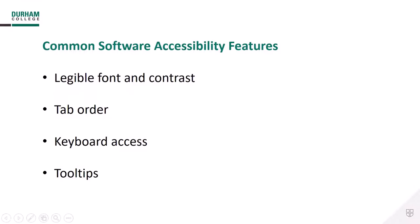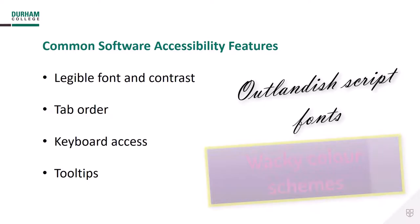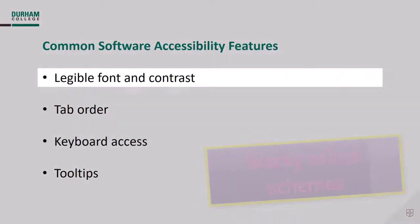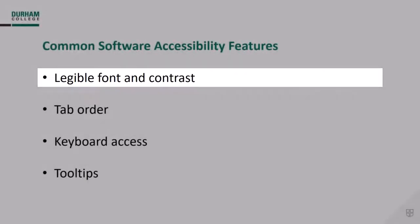Four ways we can start incorporating accessibility features into our applications in the scope of this course are listed here. First, we've got legible font and contrast. I'm going to choose not to focus on this here because we've already talked about how helpful it is to use standard fonts and color schemes supported by the major operating systems. As long as we don't use outlandish script fonts and wacky color schemes in our Tkinter applications, the default will work for our purposes.